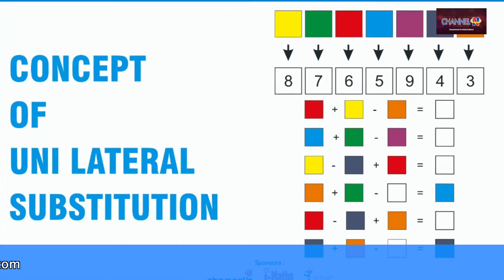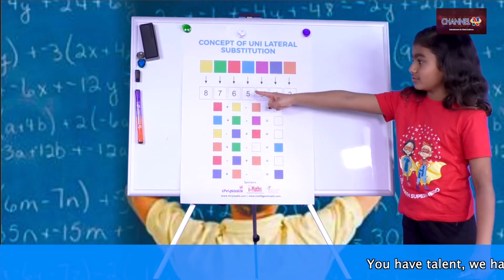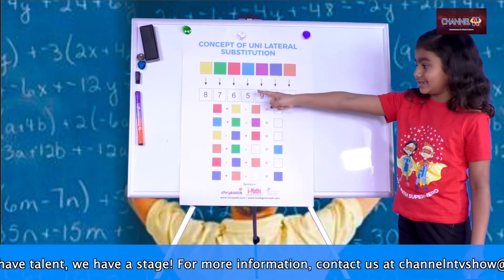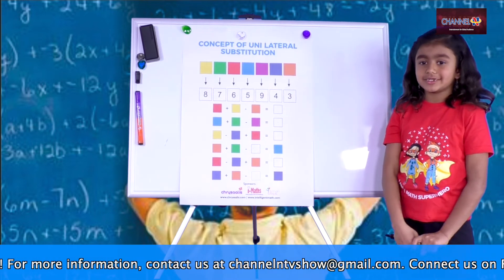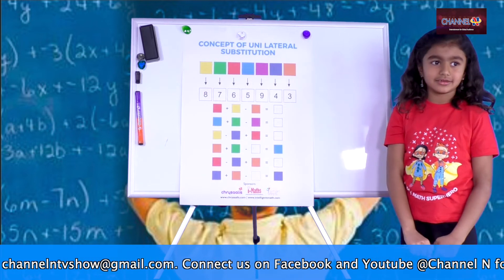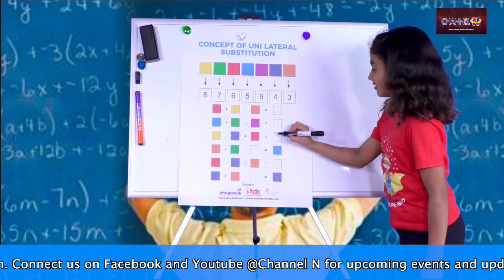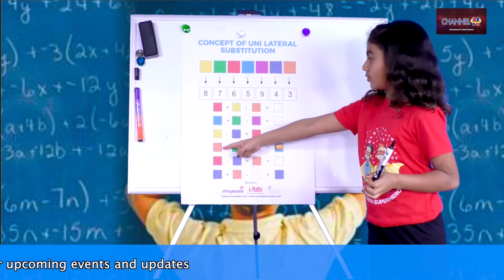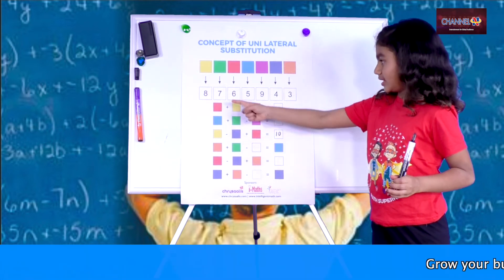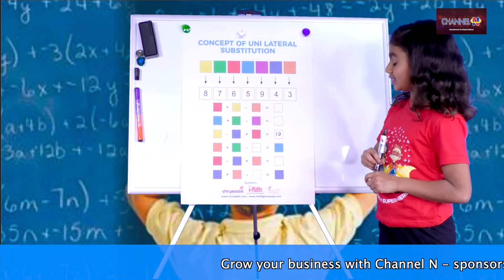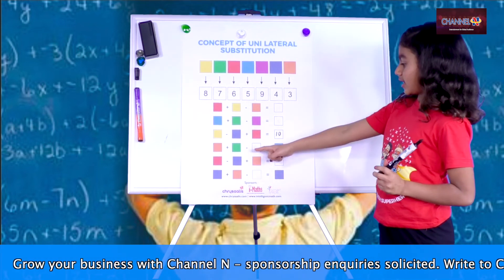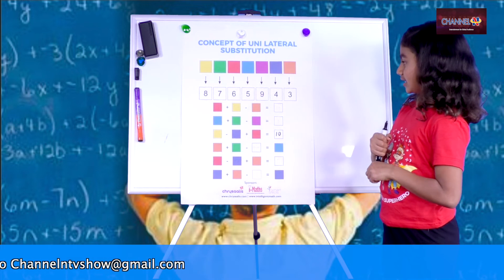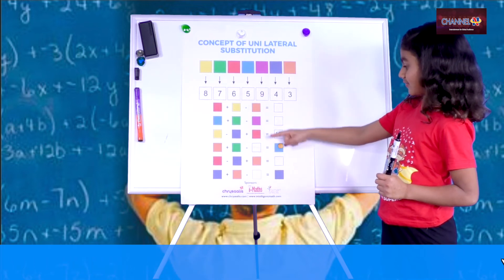Concept of unilateral substitution. Yellow is 8, dark blue is 4, red is 6. So 8 minus 4 plus 6 equals 10. Orange is 3 and green is 7. 3 plus 7 equals 10. Minus blank equals — blue. 10 minus blue, which is 5, equals blue.